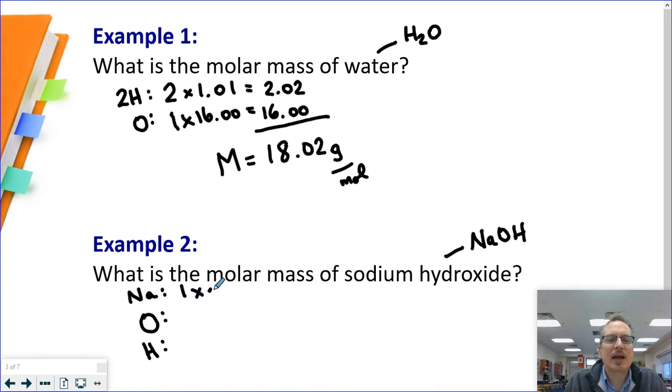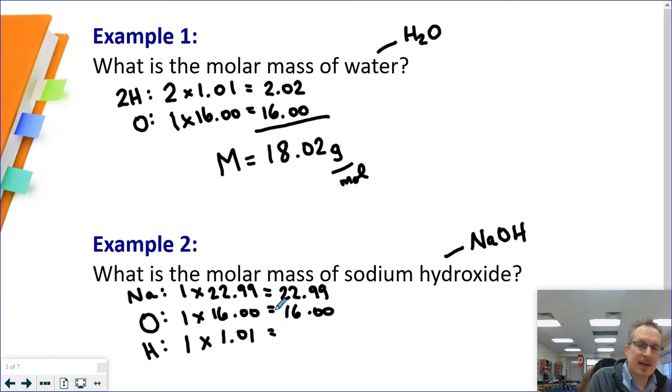We're going to have 1 times 22.99 is 22.99. We have 1 times 16 is going to be 16. And we have 1 times 1.01. So we're going to add this up, 22.99 plus 16 plus 1.01.